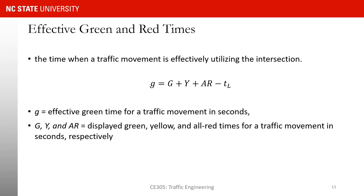After talking about lost time, we know that not all of the green time provided to a phase is going to be used effectively. What we want to find out is the effective green duration — the duration of green time that is used effectively. We call it effective green and show it with lowercase g. The amount of effective green can be found using the equation shown on this slide.